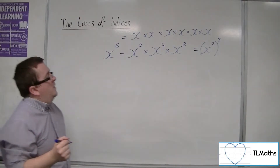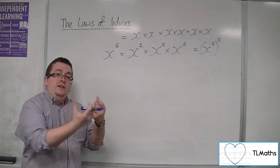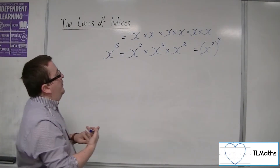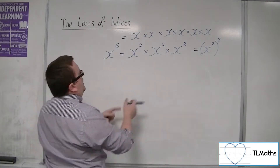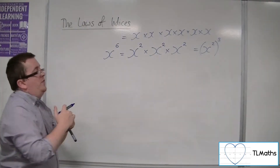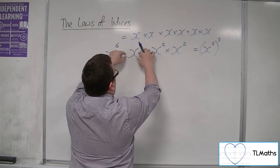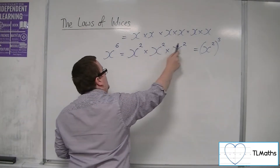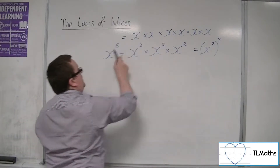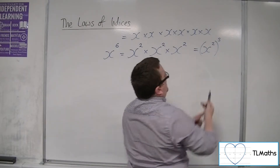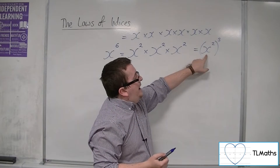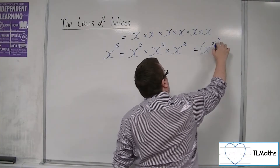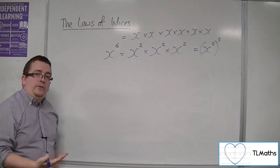What we're really seeing here is a few different indice laws working together. We've got this concept that when I'm multiplying with the same base number — that's what we refer to as x, this base value — then I can add the indices together. 2 plus 2 plus 2 is 6. But I've also got this fact that if I have x squared in a bracket, cubed, then I can multiply the 2 and the 3 together to get the 6.